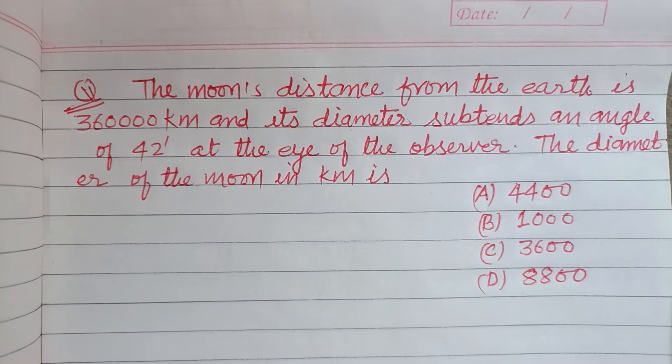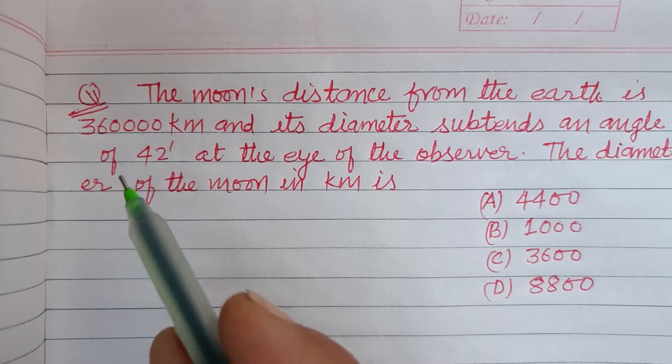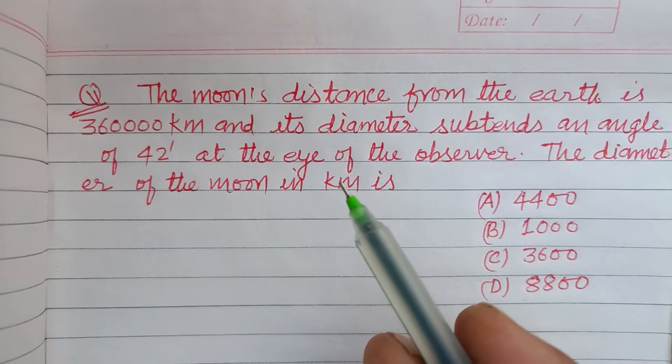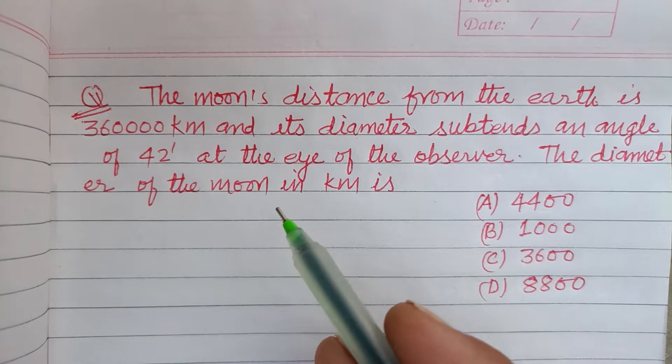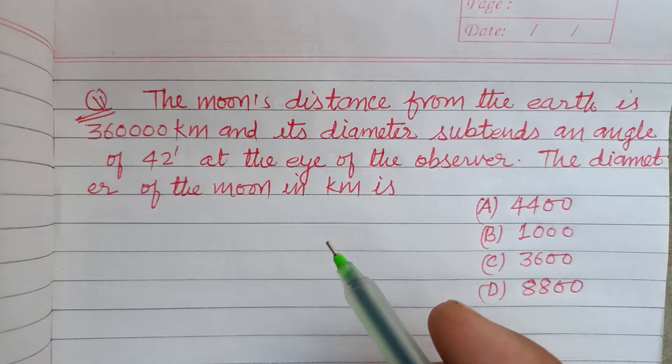Hello viewers, warm welcome to this YouTube channel. The moon's distance from the Earth is 360000 kilometers and its diameter subtends an angle of 42 minutes at the eye of the observer. The diameter of the moon in kilometers is: